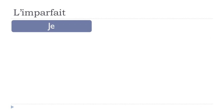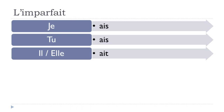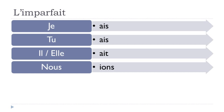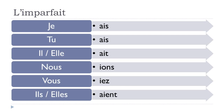After removing the -ons ending, you add the imparfait endings: for je: -ais, for tu: -ais, for il/elle: -ait, for nous: -ions, for vous: -iez, for ils/elles: -aient. For pronunciation, the endings -ais, -ait, and -aient are all pronounced 'a'. So je, tu, il, and ils all sound the same phonetically.